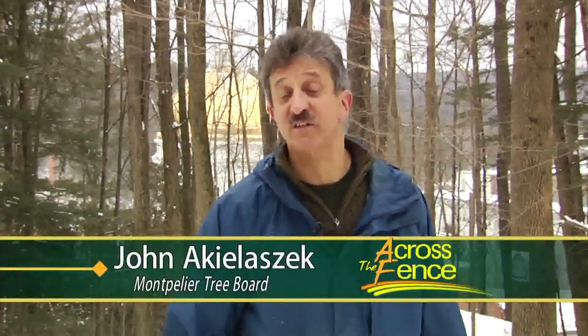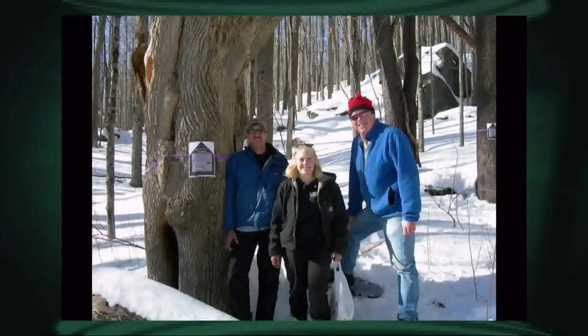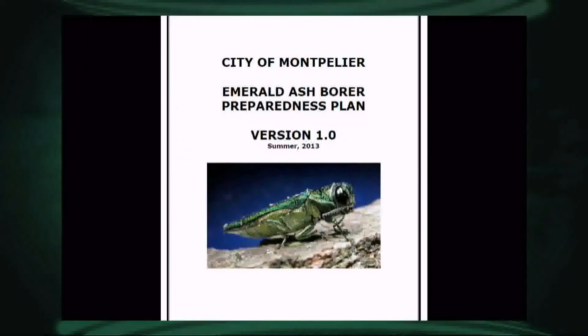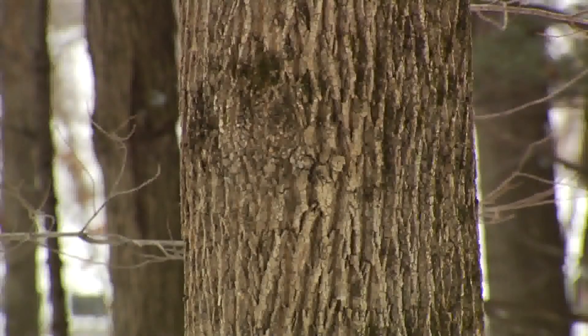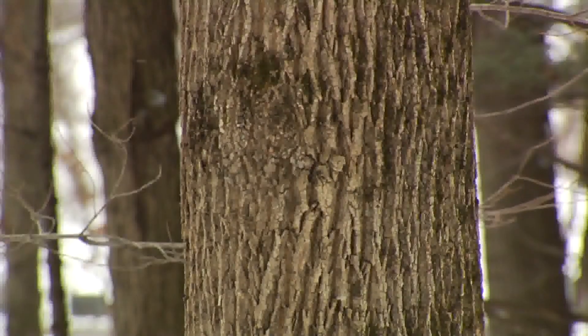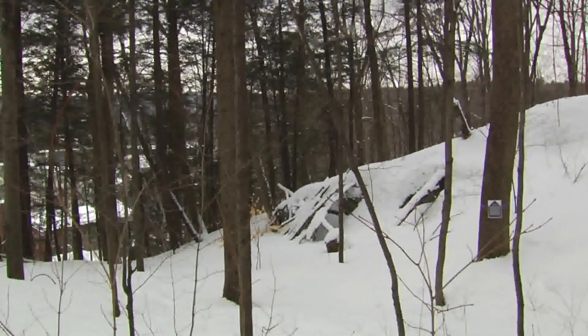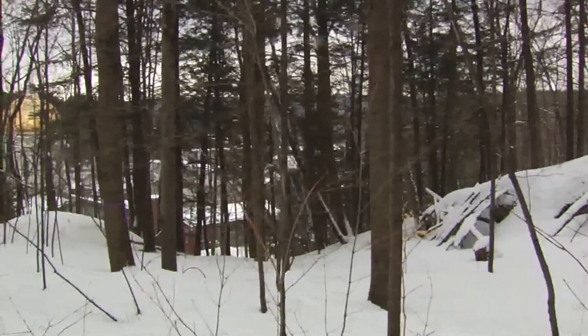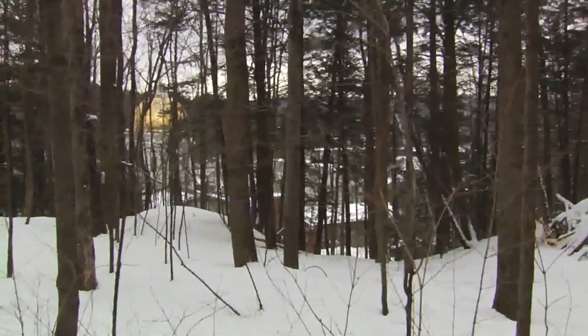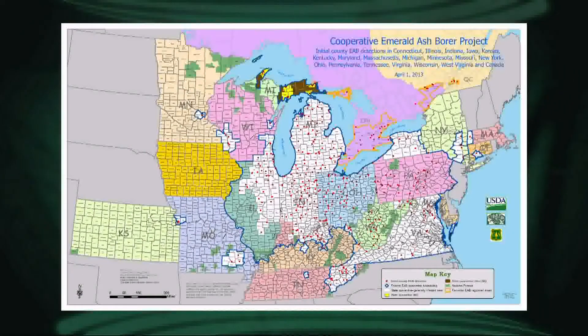As part of a preparedness plan, you really need to know how many ash trees you have and how vulnerable your community is. John Akwalashek is a member of Montpelier's tree board, a volunteer group that helps maintain downtown trees and plan for the future. He took the lead on a preparedness plan for the city. The question is not if, but when — and it's going to happen, so it's important for the community to be prepared. Across the country, there are billions of ash trees at stake, and millions have been killed by the emerald ash borer. When he started working on the plan, 19 states were infested; now it's up to 22. The emerald ash borer is on the move.